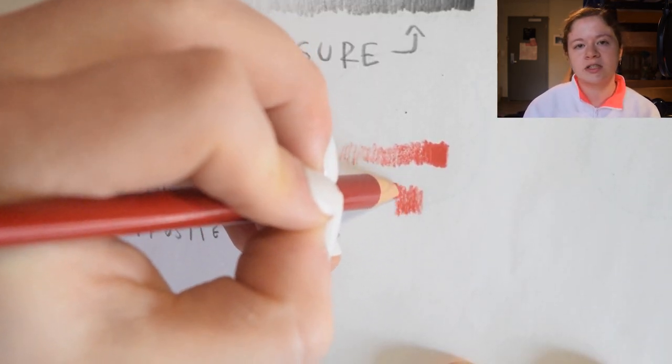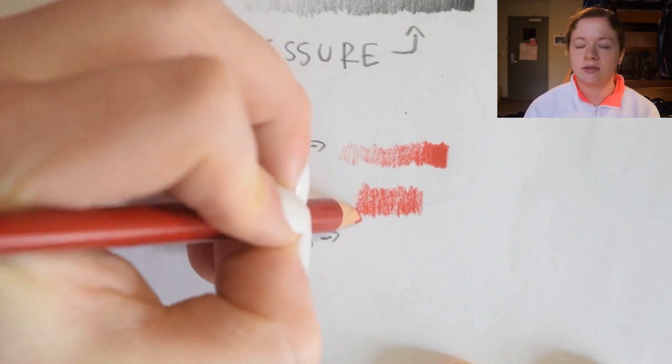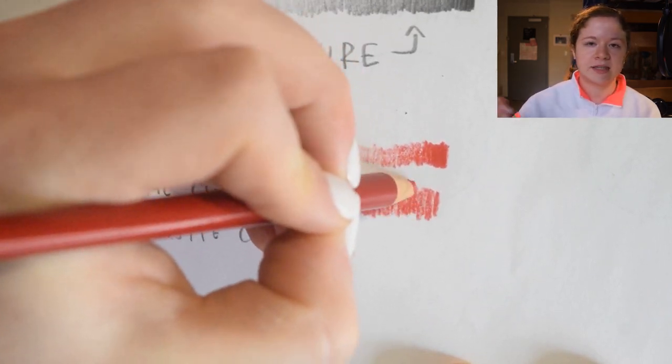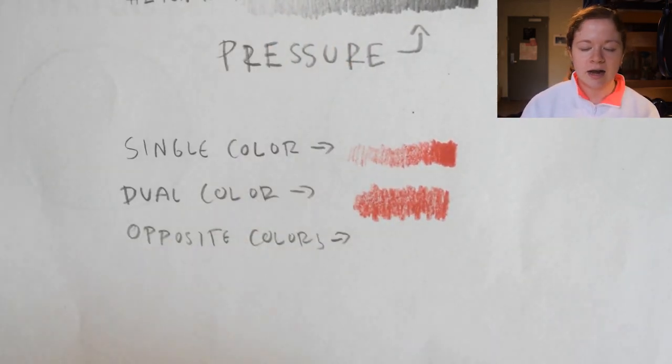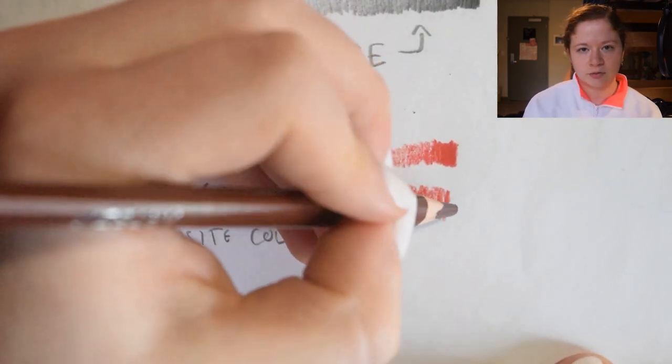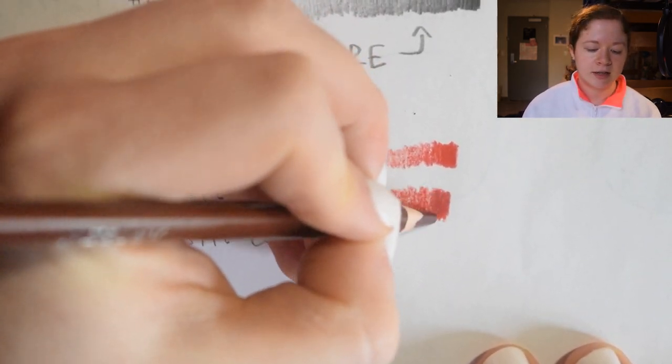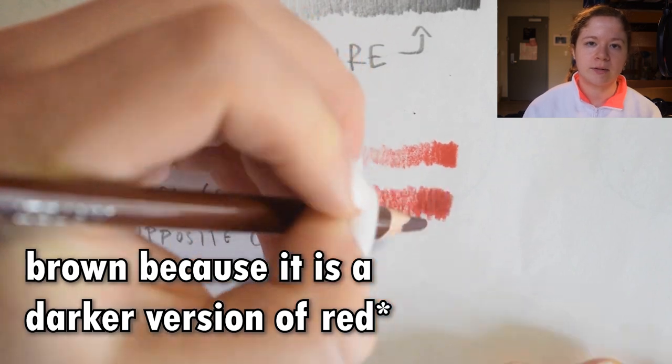Now for dual color, this is probably the most common way that I do shading. Let's say I have a character that has a red shirt and now I want to go ahead and shade it. So I will set down a base color of red across the entire shirt and then I will take brown and put in my shadows.